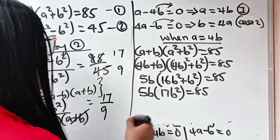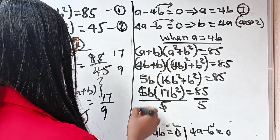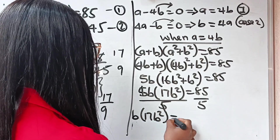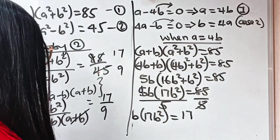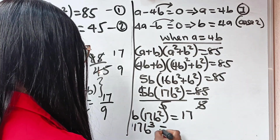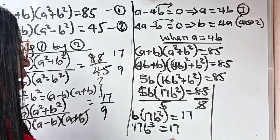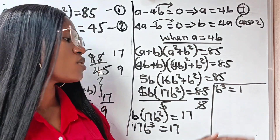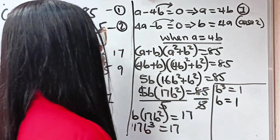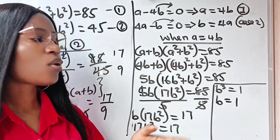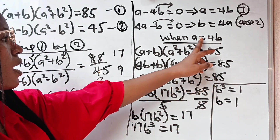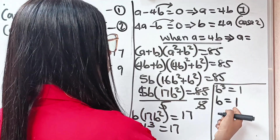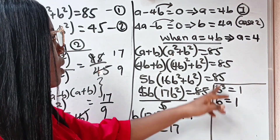Let's divide both sides by 5 first. We have b bracket 17b squared equals 17. Multiplying out, we have 17b to the power of 3 equals 17. Dividing both sides by 17, we get b to the power of 3 equals 1. Taking the cube root of both sides, b equals 1. Since b equals 1 and a equals 4b, we get a equals 4 times 1.